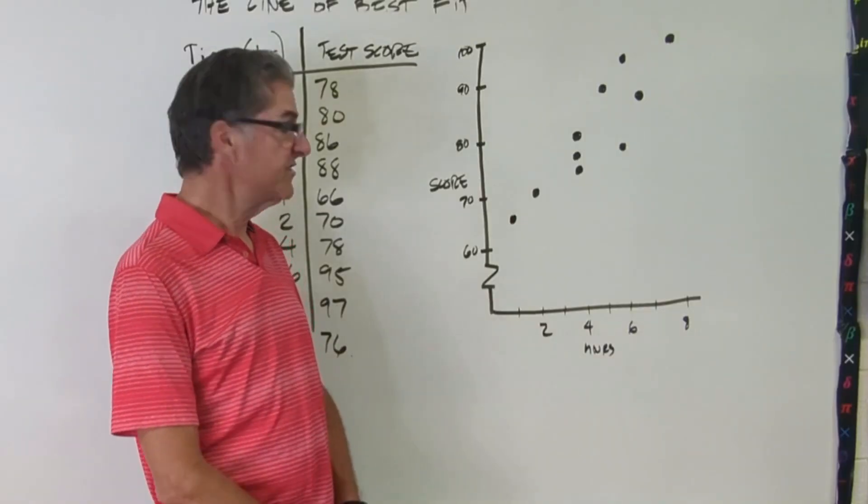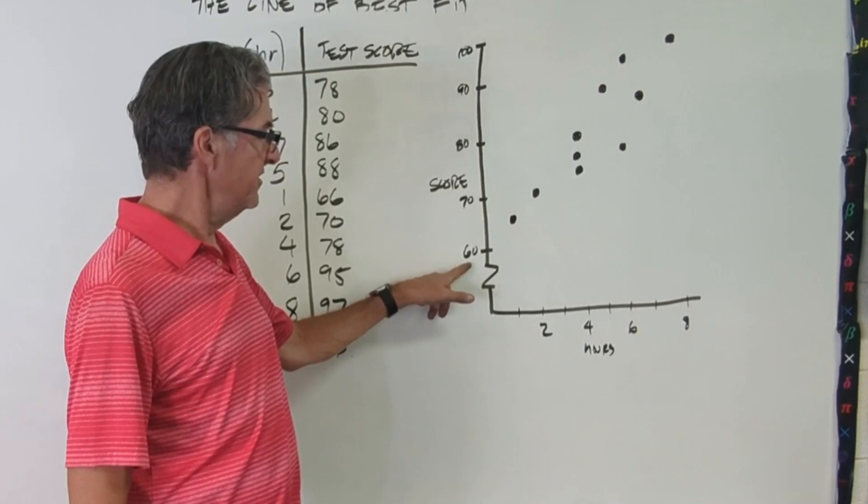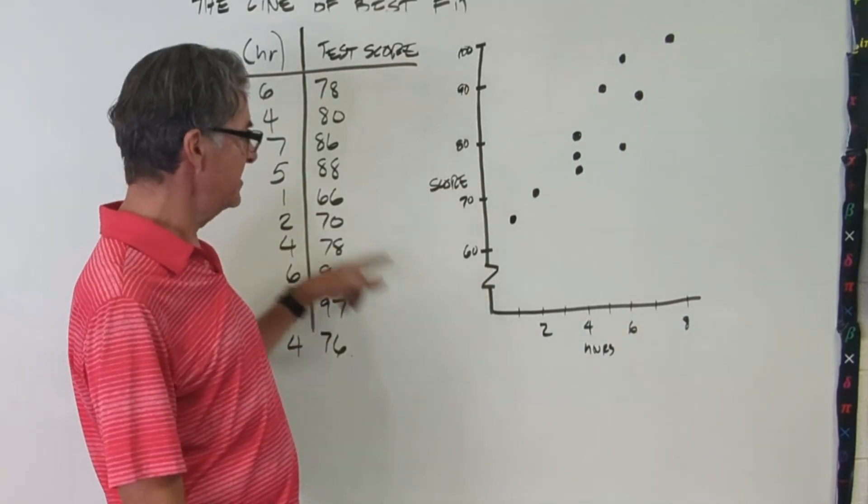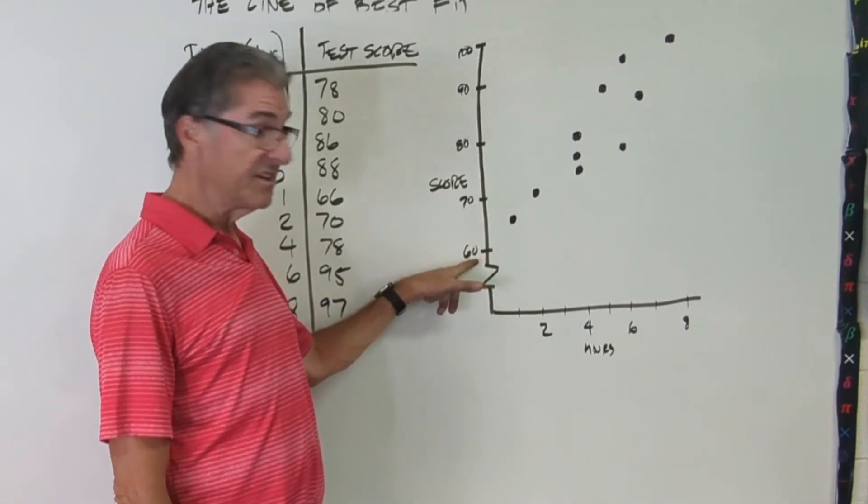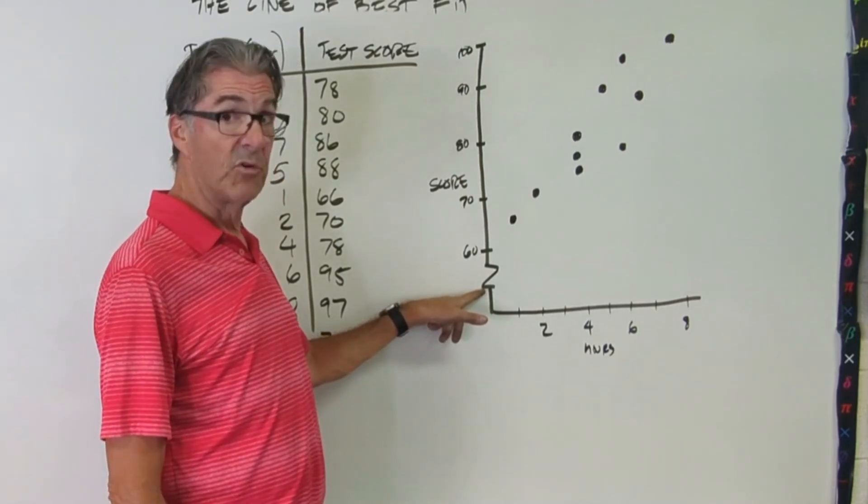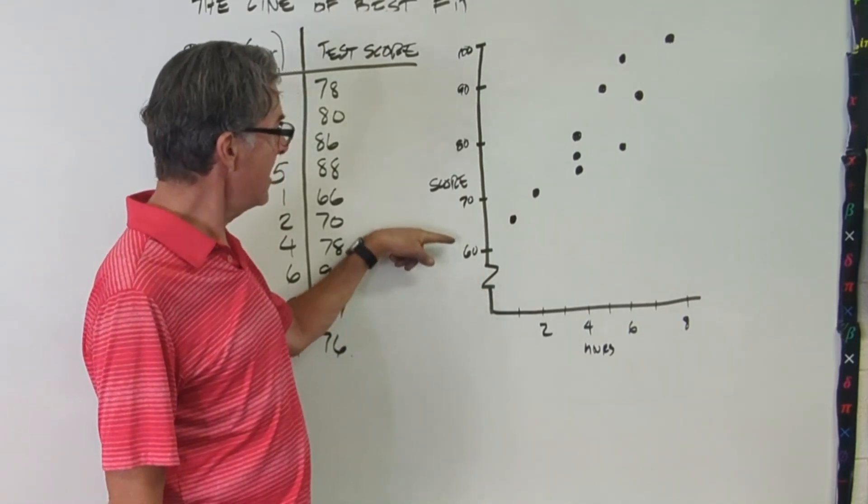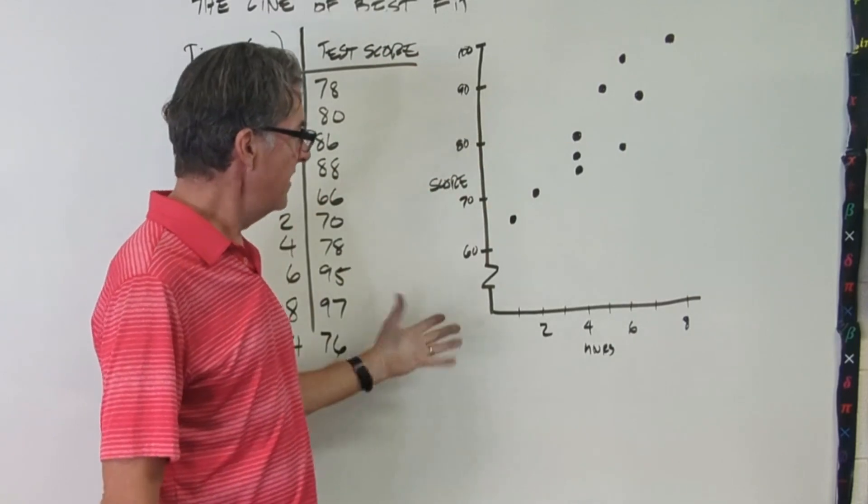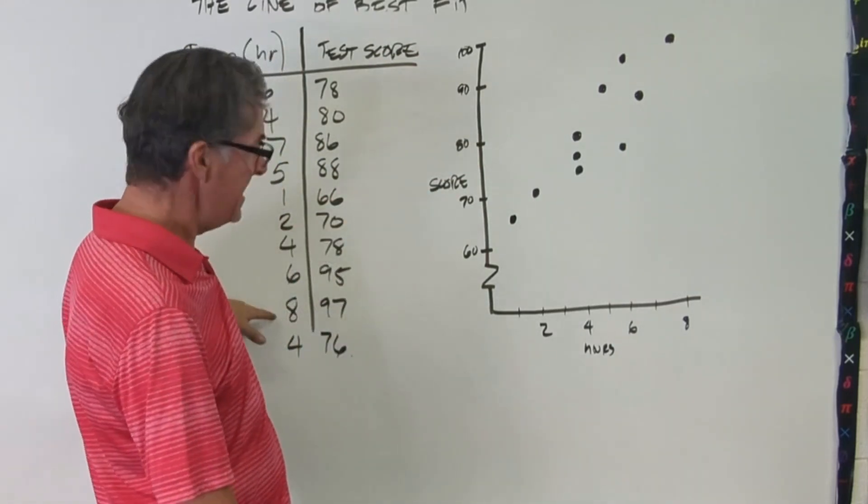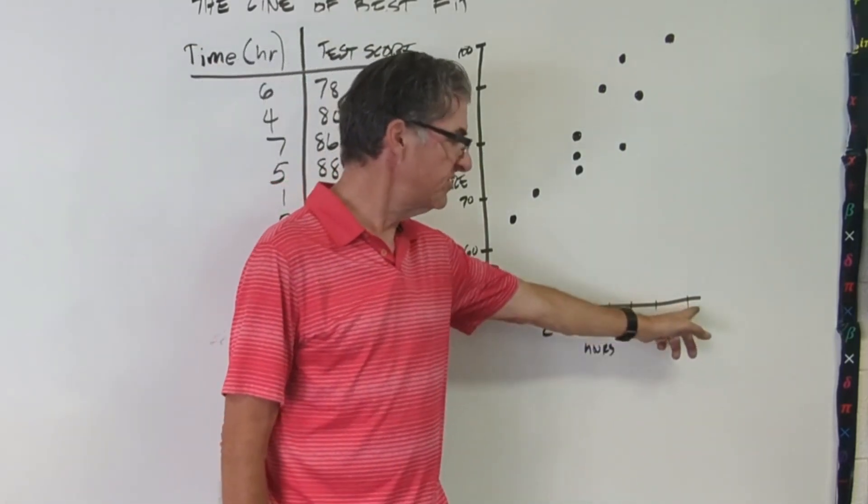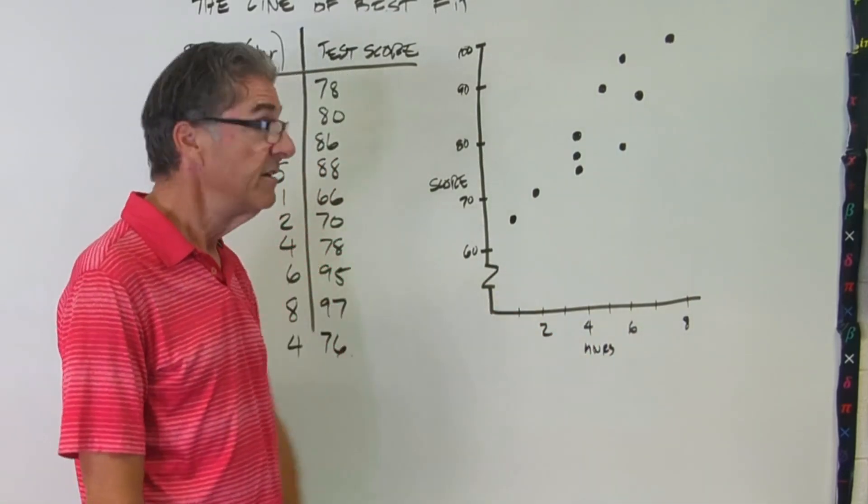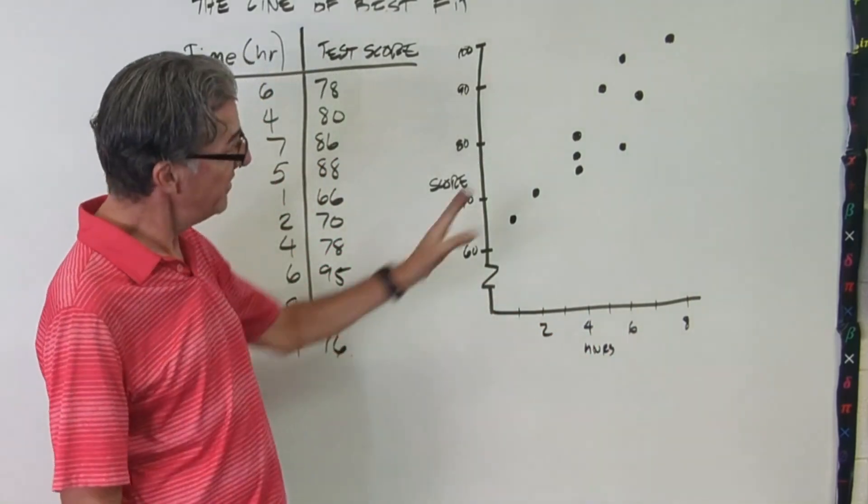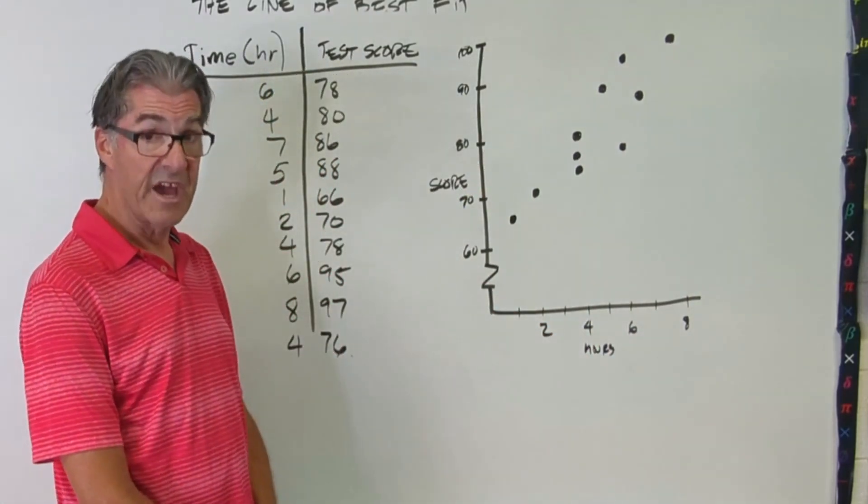Here's my scatter plot. And notice how since our lowest test score is 66, I started my scale at 60 with the scale break symbol right in there. So that's a good trick to do that. And I just scaled it up by 10% each time. And then I really only needed all the way up to eight hours. So I scaled my x axis, just ending at eight. And then I plotted all my points on there.